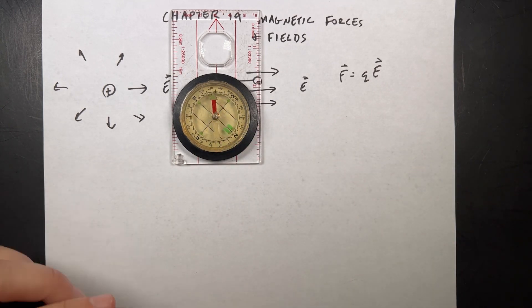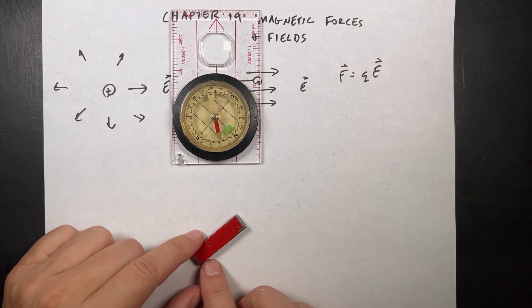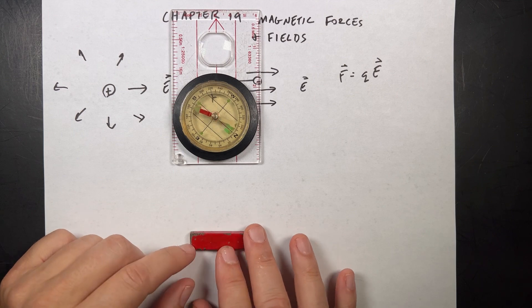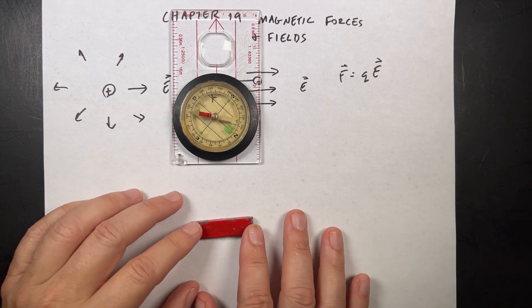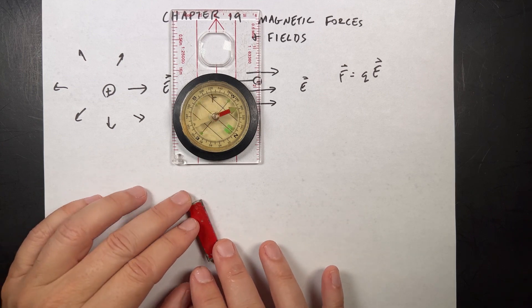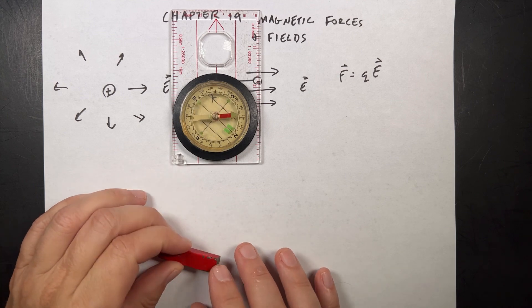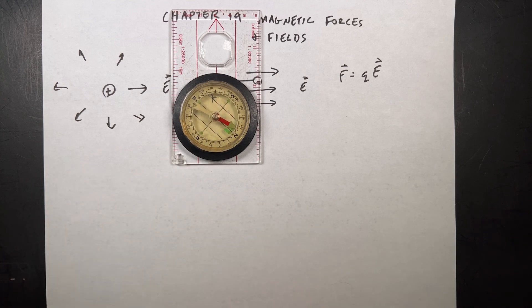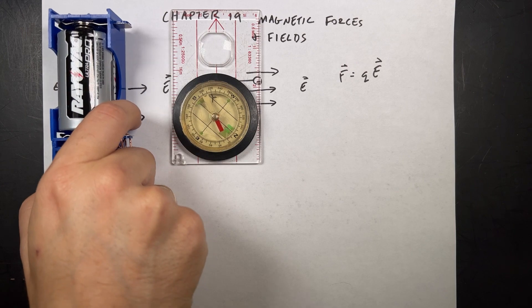Now, I'll tell you the truth. These bar magnets — permanent magnets we call them — they're not easy to explain why they are the way they are. And we'll talk about it a little bit, but actually an easier example of a magnetic interaction, not from a magnet, but from something we've already seen: electric current.